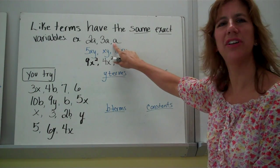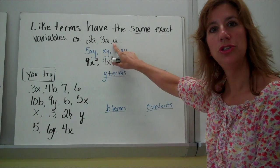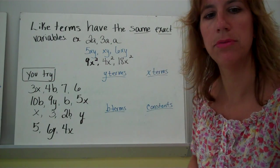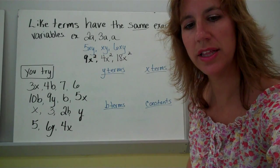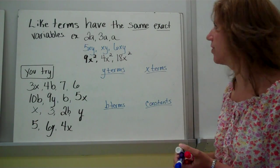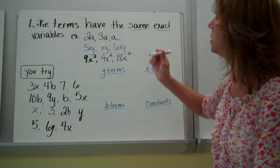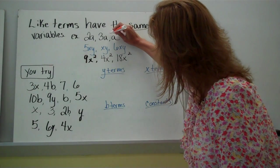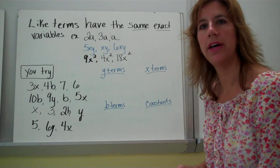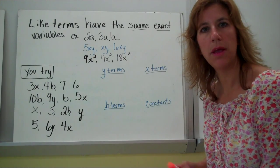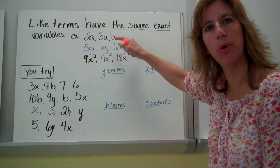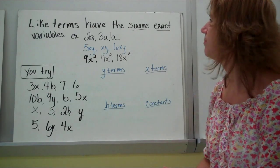Notice this one doesn't have a number — that doesn't matter. Do you know what the missing number is? Whenever you don't see a number, there's really a 1 kind of hanging out in front. There's a 1 here — it's kind of hiding, it's implied. If you have an apple, that means you have one apple. Well, I have an 'a' so that means I have one a.